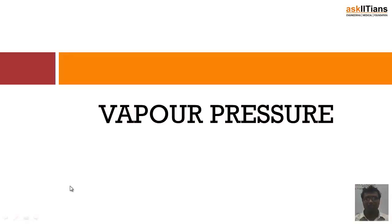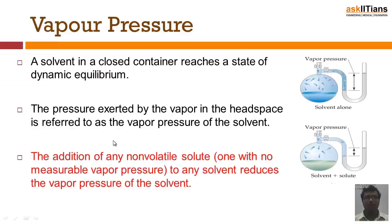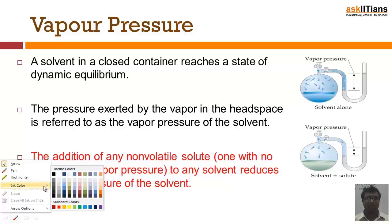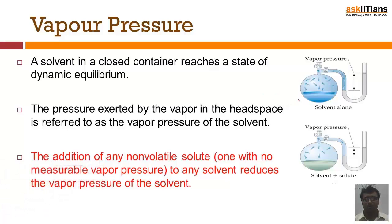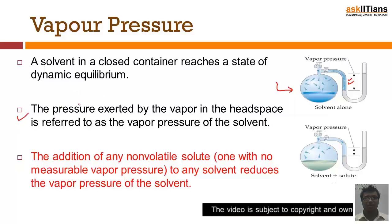Vapor pressure — what is the vapor pressure? Let's understand the definition from the slide. You can see there is a container with solvent inside, and there are some vapor molecules of this solvent present in the container. These vapor molecules exert certain pressure on the solvent. The pressure exerted by this vapor in the headspace is referred to as the vapor pressure of the solvent.